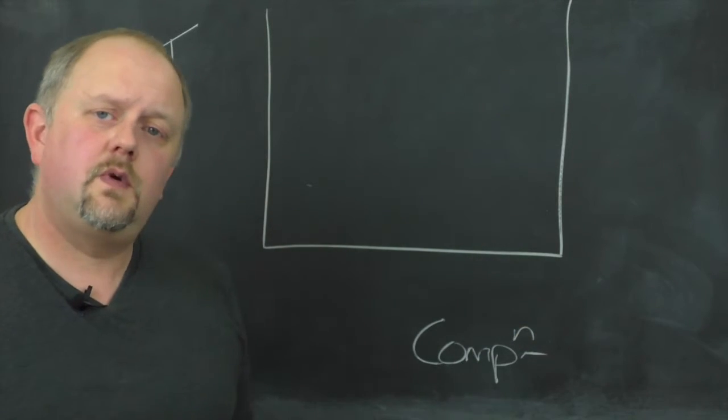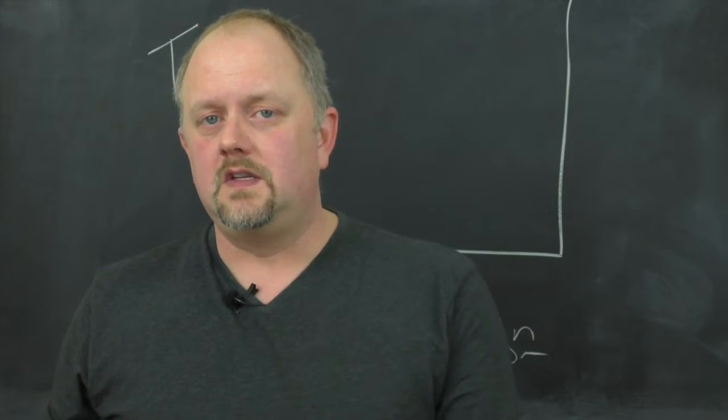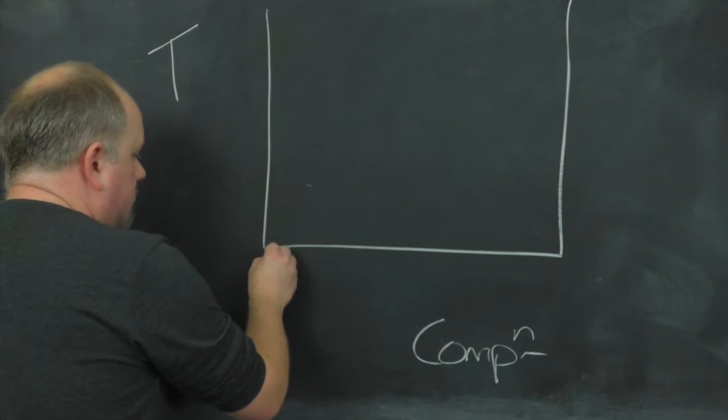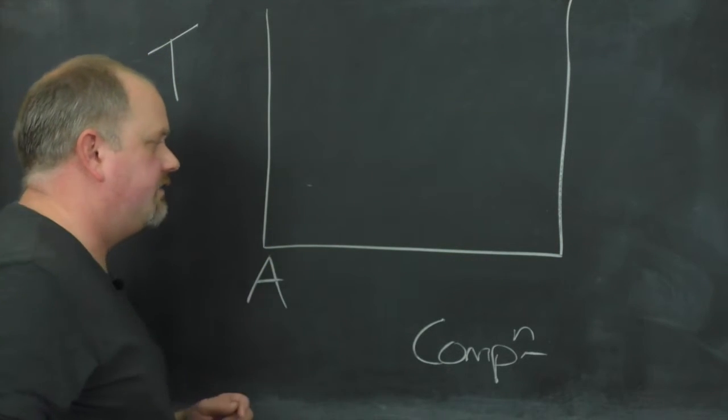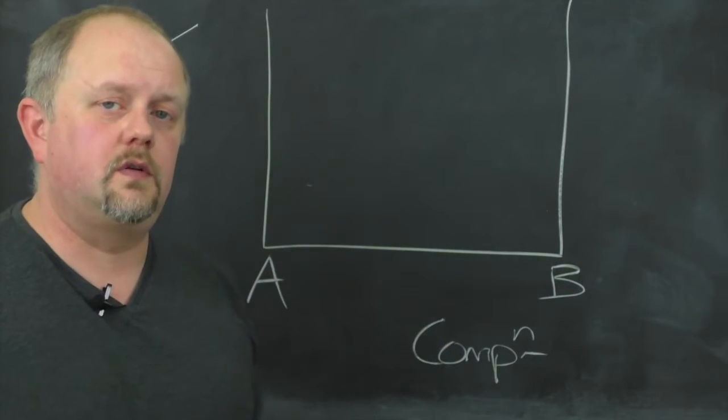In the systems we're going to look at in this lecture course, we'll be looking at binary systems, which means two-component systems mostly. So in a two-component system we can schematically have our components A and B.